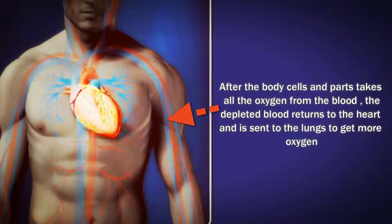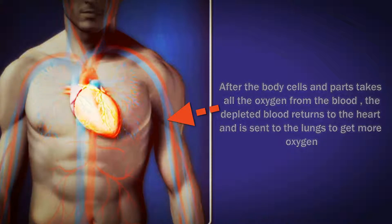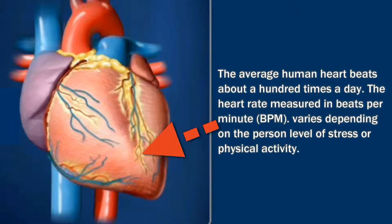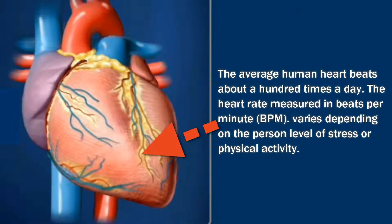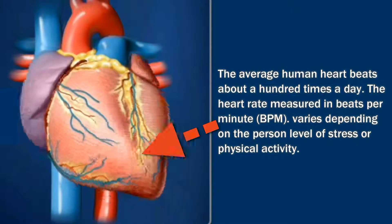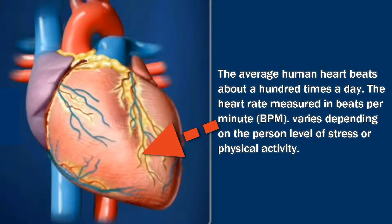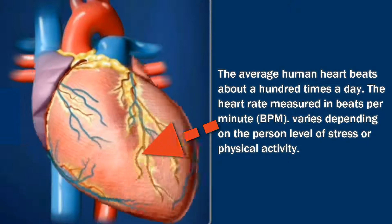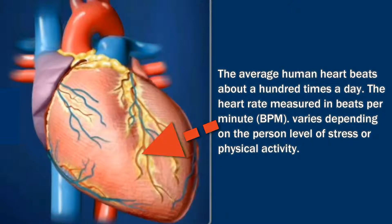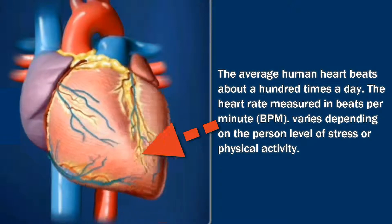Now let's understand the pumping action of the heart. The average human heart beats about a hundred thousand times a day. The heart rate, measured in beats per minute (BPM), varies depending on a person's level of stress or physical activity. Let's see how exercise affects the heart rate.